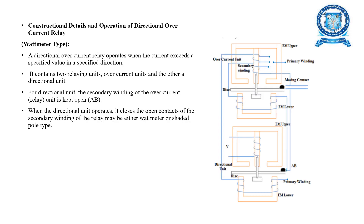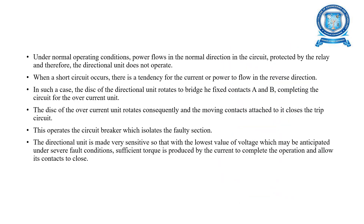Here is the construction and operation of the directional overcurrent relay. The relay operates when current exceeds a specific value in a specific direction. For the directional unit, the secondary winding of the overcurrent relay is kept open at contacts AB. When the directional unit operates, it closes these open contacts. The secondary winding of the relay may be either a wattmeter or shaded pole type. Under normal operating conditions, power flows in the normal direction and the directional unit does not operate. When a fault occurs, the disc of the directional unit rotates to bridge fixed contacts A and B, operating the circuit breaker to isolate the faulty section.